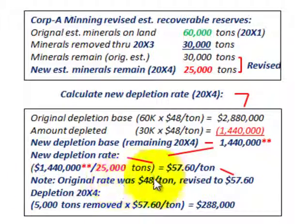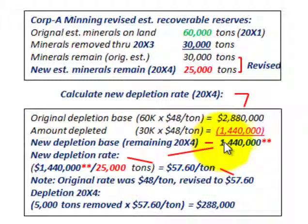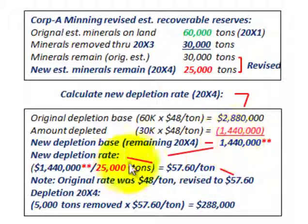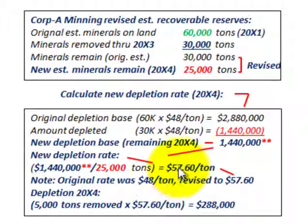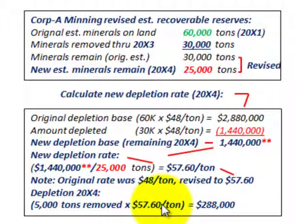Note that the original rate was $48 per ton and we've revised it to $57.60 per ton. To apply this: take the new depletion base as the remaining amount of the original base minus what has been depleted to date — that becomes the new depletion base. Divide it by the new estimated units available, in this case 25,000 tons, to get the new depletion rate of $57.60 per ton. For 20x4, if they remove 5,000 tons, we multiply 5,000 tons by $57.60, giving a depletion cost of $288,000.